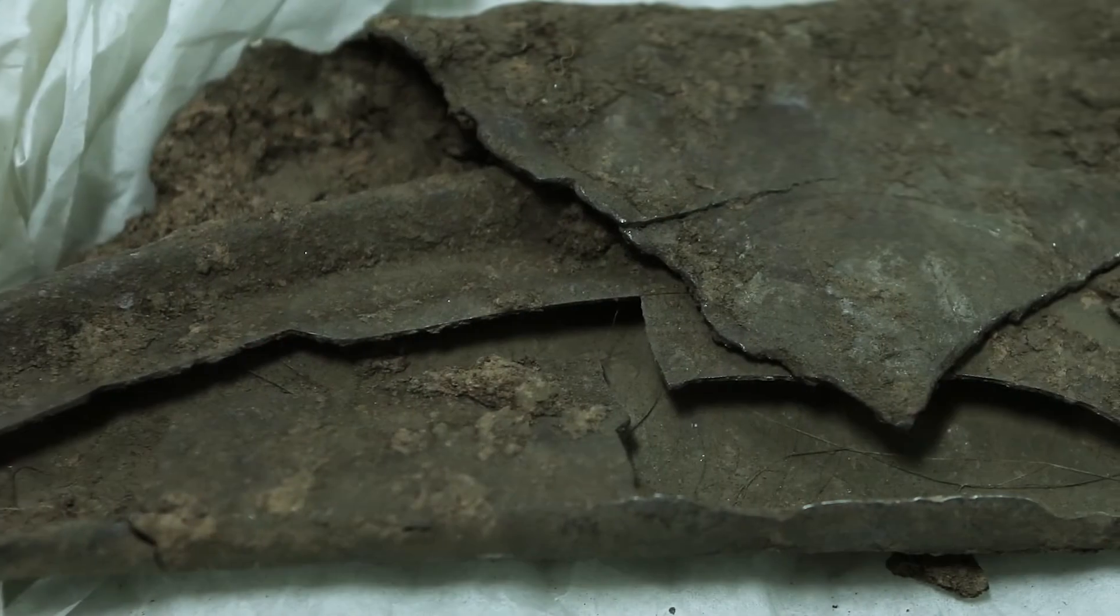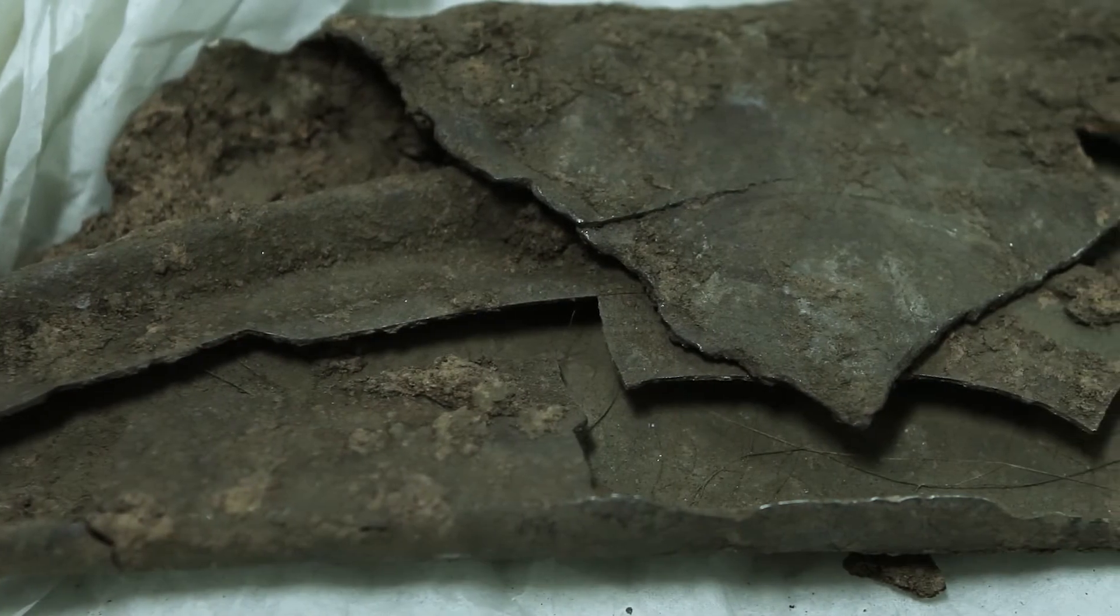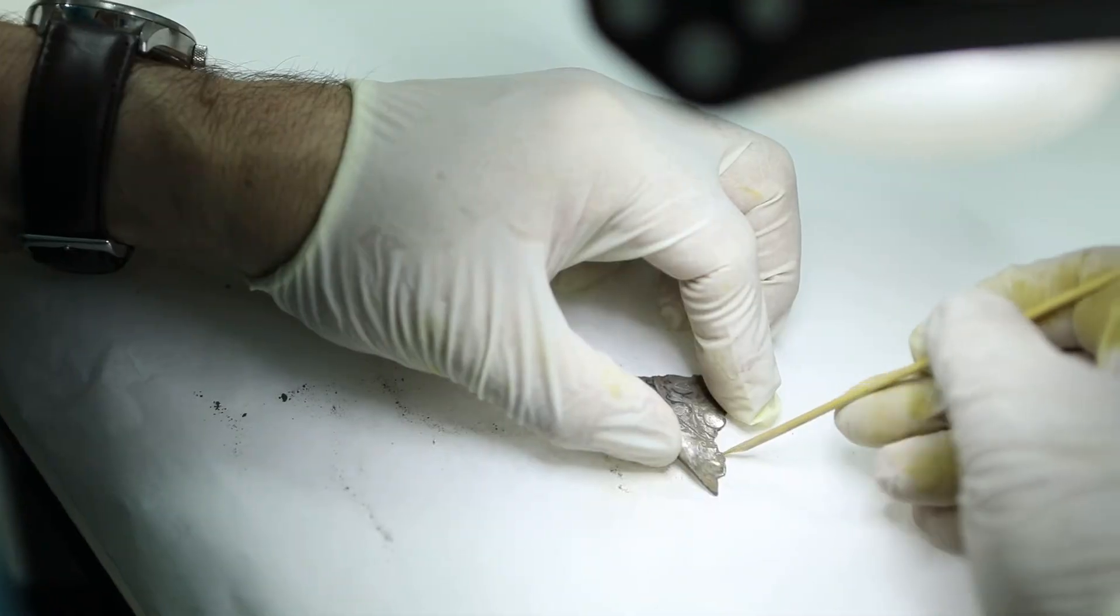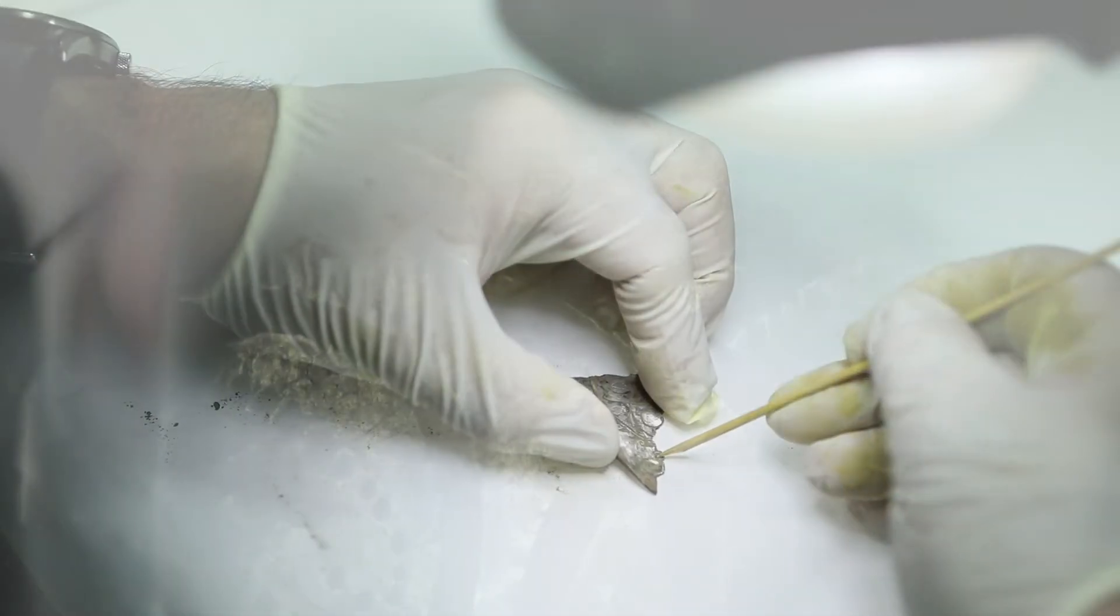When you get this silver out from the field, of course it's covered in soil, it's covered in mud. And one of the processes that the conservators had to do was gradually, carefully, painstakingly teasing this mud off.